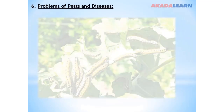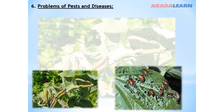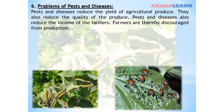Problem number six: Pests and diseases. Pests and diseases reduce the yield of agricultural produce. They also reduce the quality of the produce and the income of the farmers. Farmers are thereby discouraged from production.